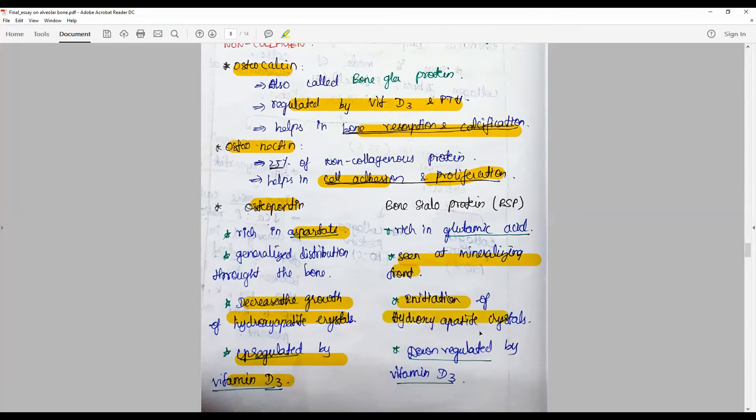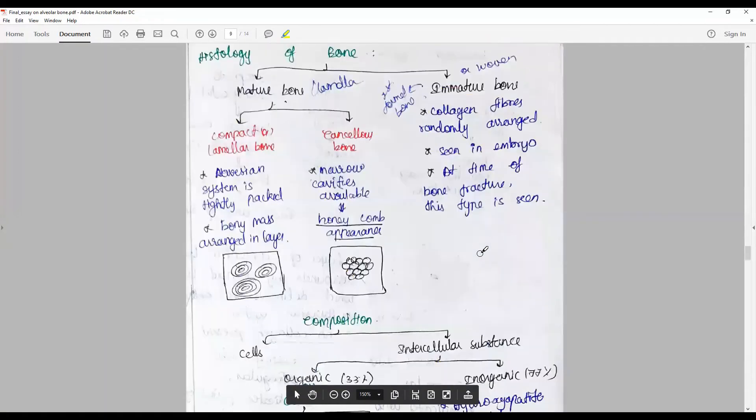Bone sialoprotein is seen at the mineralizing front and associated with initiation of hydroxyapatite crystal and down-regulated by vitamin D3. They are intrinsically related. We saw about the mature bone and the immature bone.